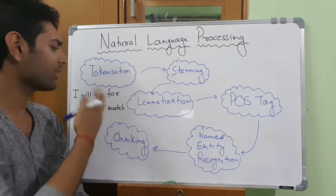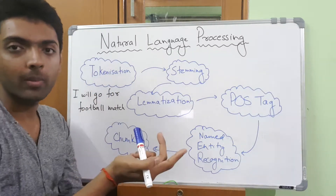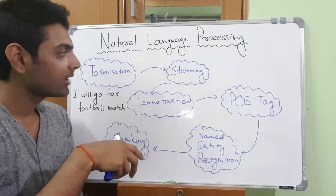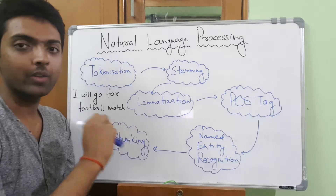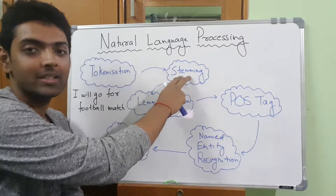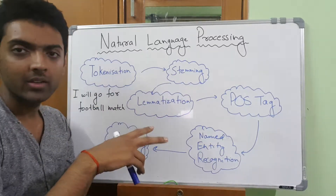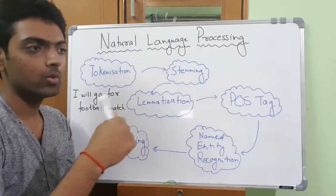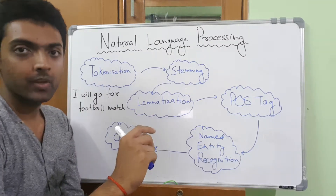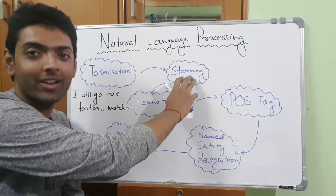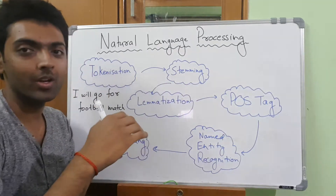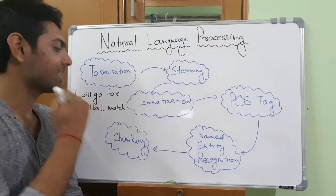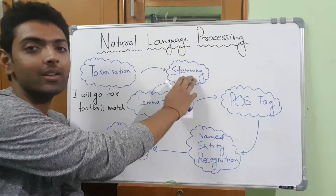The same sentence could have been 'I will go for football match,' which makes almost the same sense. That cleaning part of the tags will be done by stemming. Stemming converts words like 'going' or 'goes' into just one word: 'go.' It cleans up your tags, which is very important. It needs to understand what you really mean, so you have to go back to the original word used in the sentence. Stemming is for that.